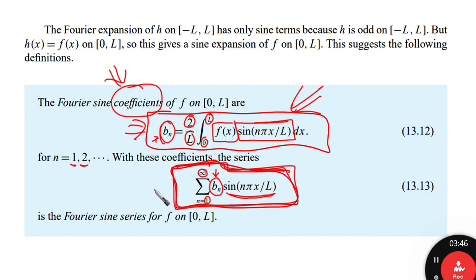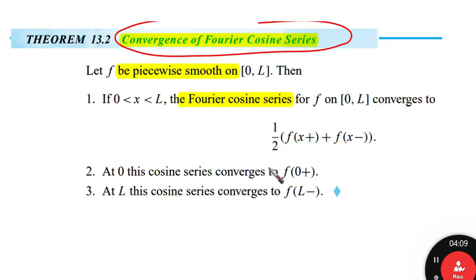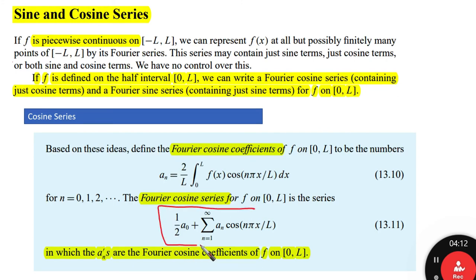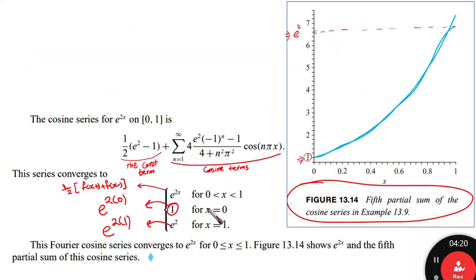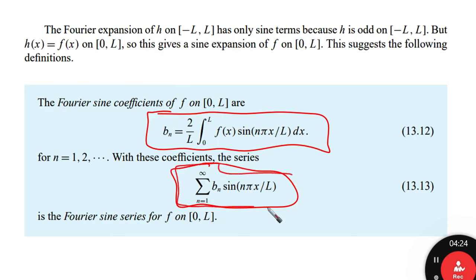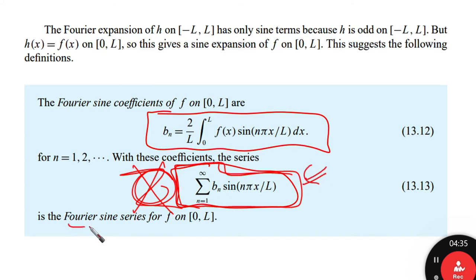There is no constant term here, because when n goes to 0, it gives 0. So even if we consider a constant term as in the cosine series, it will vanish here. In the Fourier cosine expansion there was a constant term plus cosine terms, but in the sine expansion we have only sine terms — no constant term. This is the Fourier sine series of the function on the interval from 0 to L.